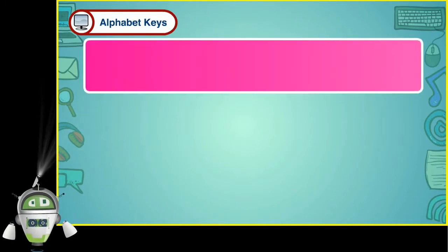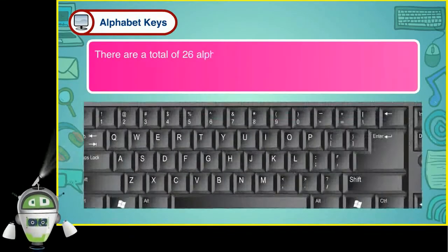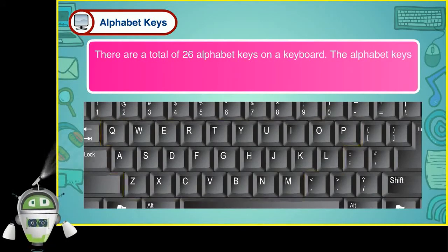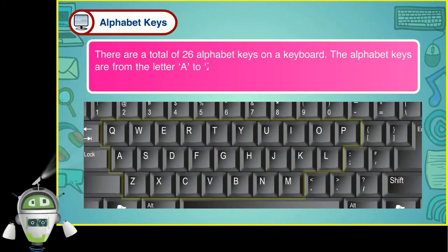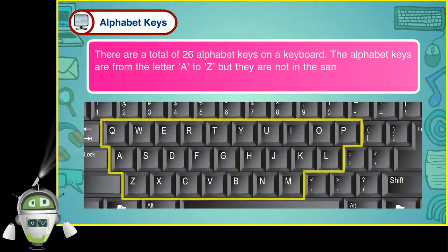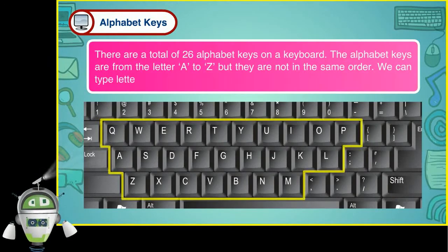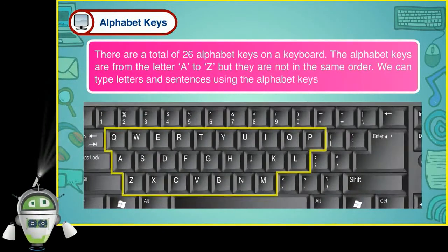Alphabet keys: There are a total of 26 alphabet keys on a keyboard. The alphabet keys are from the letter A to Z, but they are not in the same order. We can type letters and sentences using the alphabet keys.